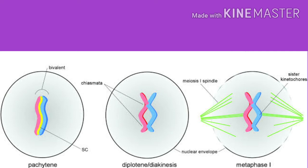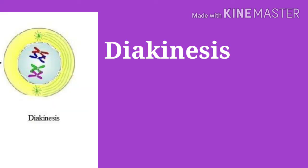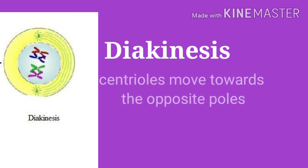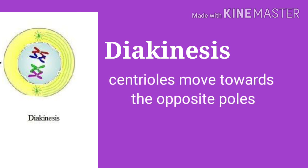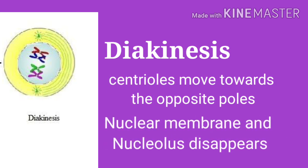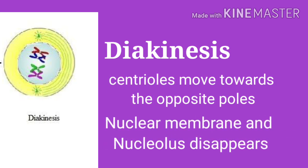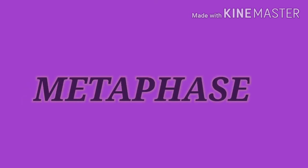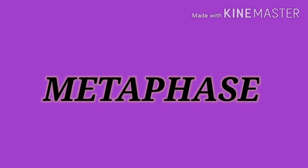This movement in a zip-like manner is called terminalization. In diakinesis, homologous chromosomes remain attached to each other only at the ends. Centrioles move towards the opposite poles, and the nuclear membrane and nucleolus disappear.